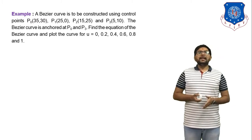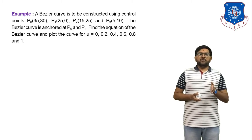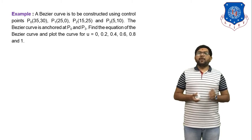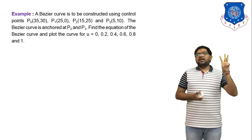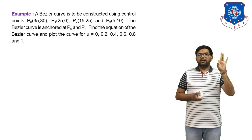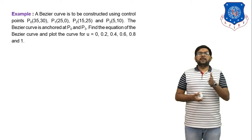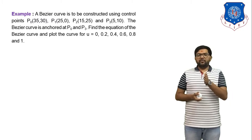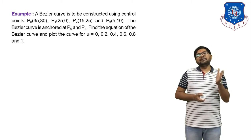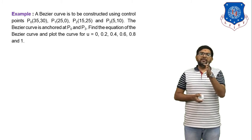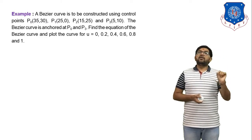Example number 1: A Bezier curve is to be constructed using control points P0(35,30), P1(25,0), P2(15,25) and P3(5,10). There are 4 control points, so the value of n is equal to 3. The Bezier curve is anchored at P0 and P3. Find the equation of the Bezier curve and plot the curve for u = 0, 0.2, 0.4, 0.6, 0.8 and 1. First we find the equation, then substitute different values of u to find coordinates, and finally plot the synthetic curve.